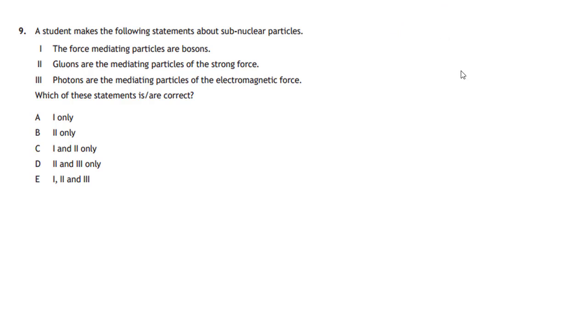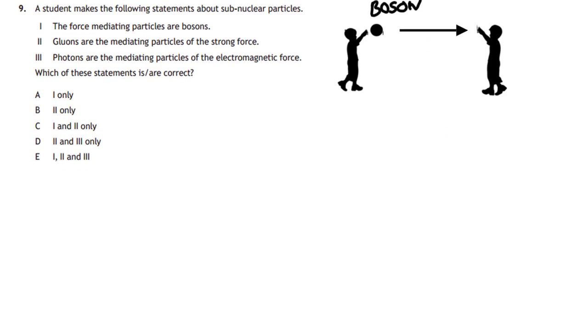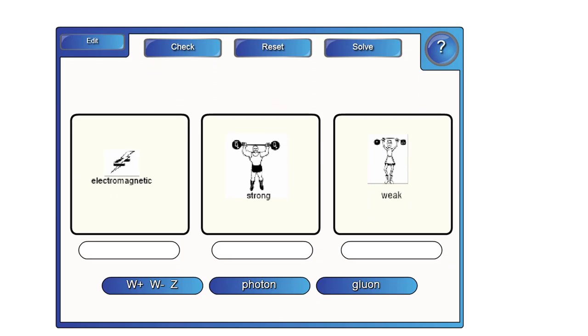Question nine is dealing again with the sub-nuclear particles. But this time with bosons. Now, what exactly is a boson? Well, a boson is the force-mediating particle. And it can be summed up by this little picture here of two boys throwing a ball at each other. The ball being thrown, you can consider that to be the boson. Because as long as these two boys throw this ball to each other, they will be locked together. They'll be forced together. And that's how we believe that forces manifest themselves. It's the exchange of this particle called the boson. And for each type of force, we have a different force-carrying particle. Now, that can be summarized up with this little revision part here.